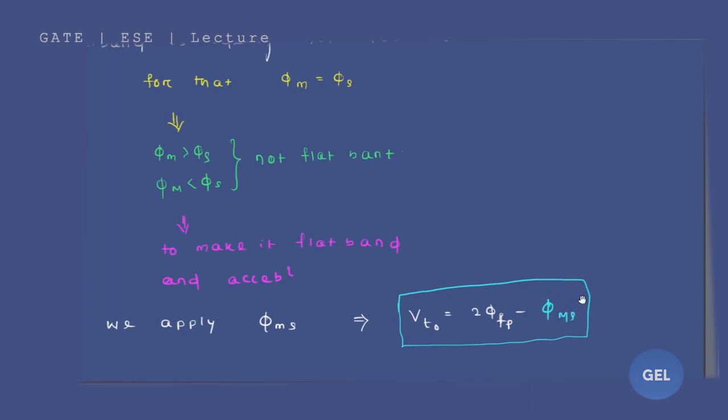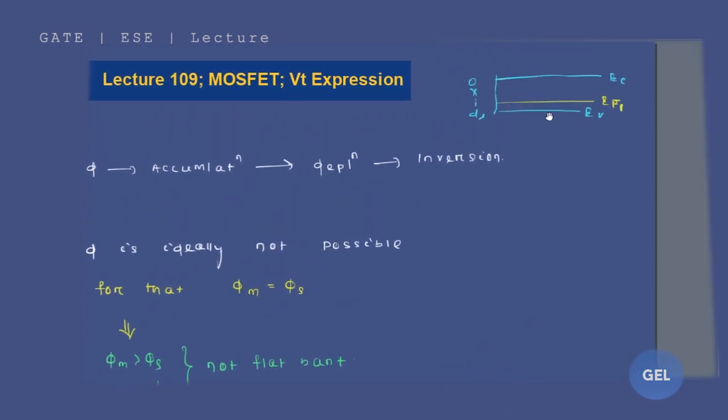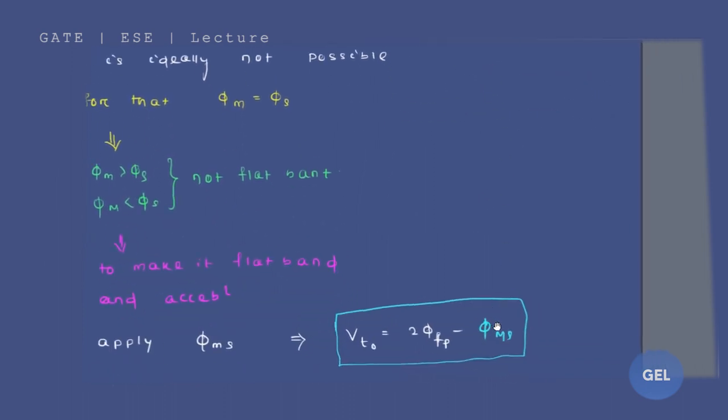Okay, so this amount of voltage is applied to make it flat. So whatever condition, in any given condition, we need to correct it. To correct it, to bring it to this format, to make it flat band, we need to apply minus phi_ms. Did you understand this?